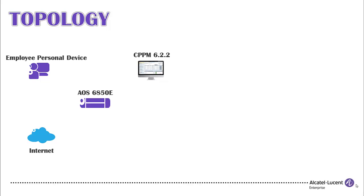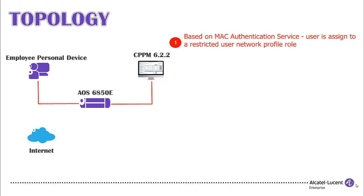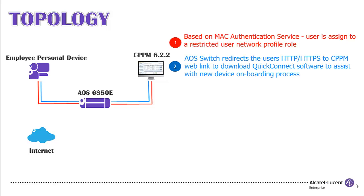Traffic flow for onboarding a wired device: based on the MAC Authentication Service configured on ClearPass, the user is assigned to a restricted user network profile role. The AOS Switch then redirects the user's HTTP and HTTPS traffic to the CPPM web link to download the QuickConnect software to assist with the new device onboarding process.